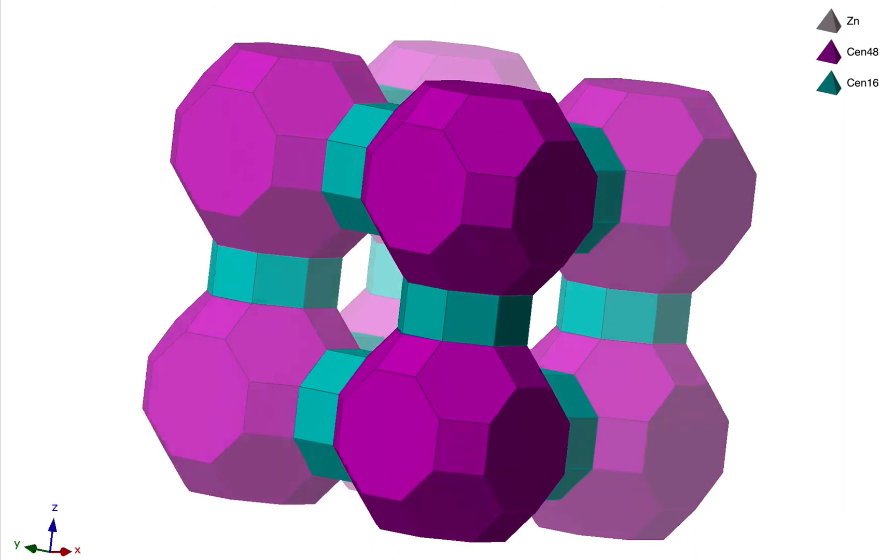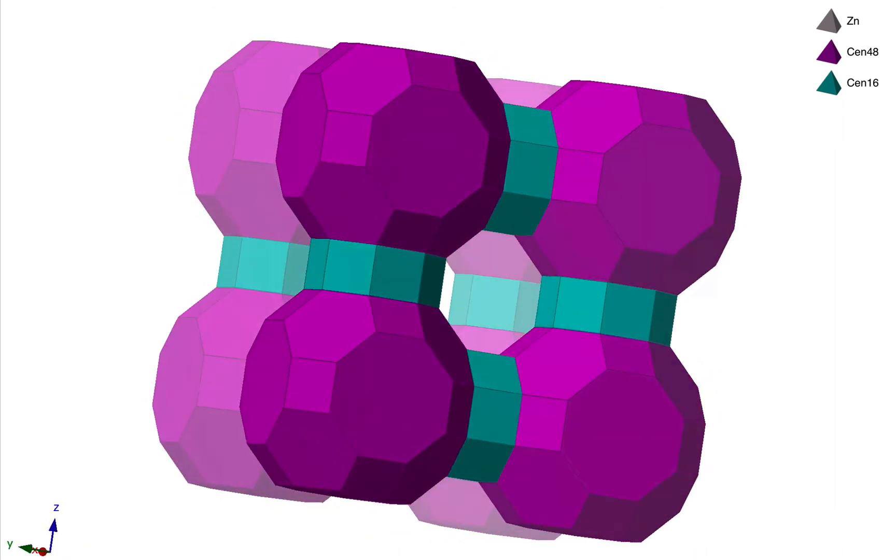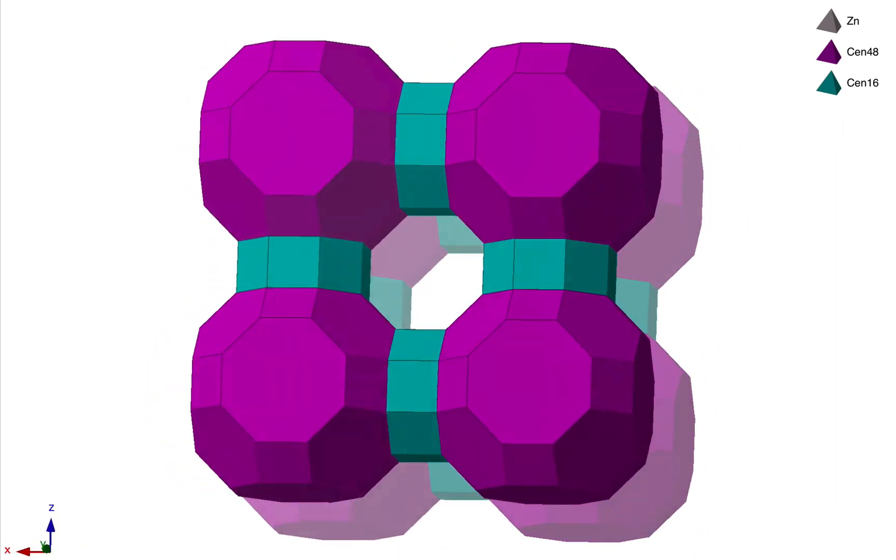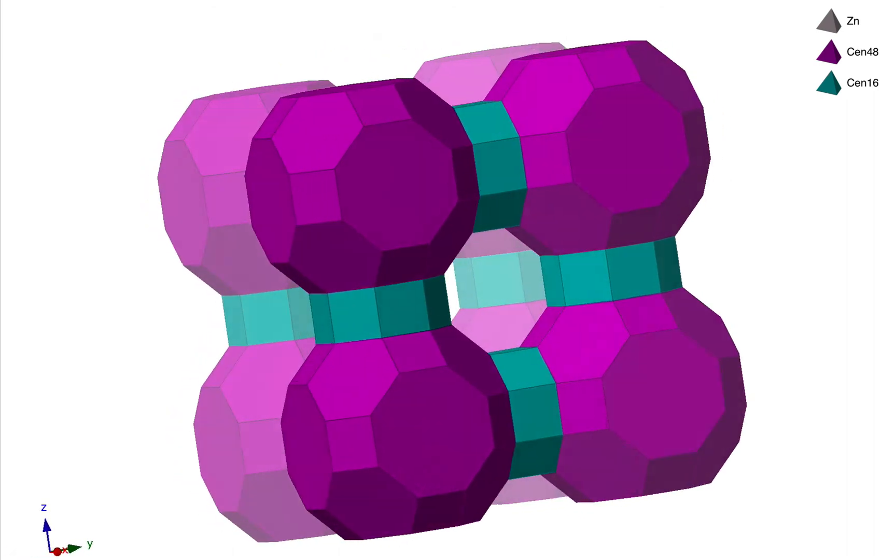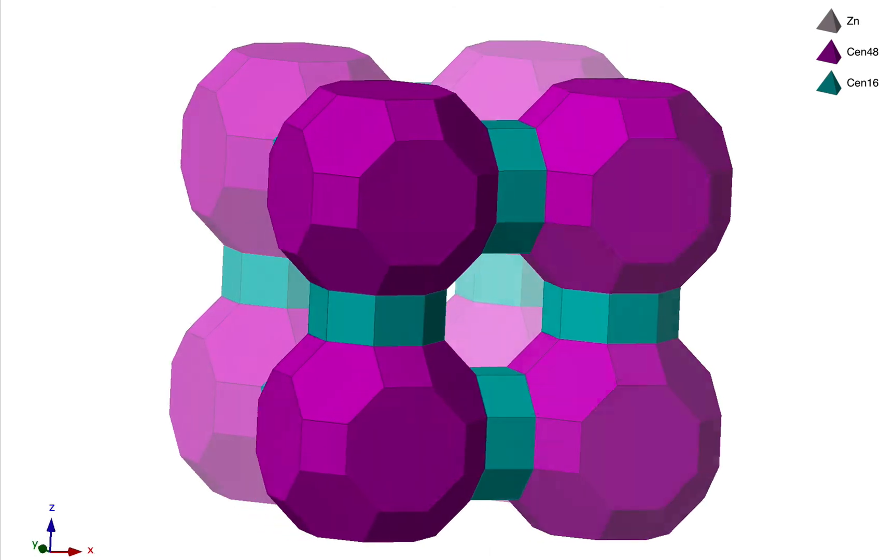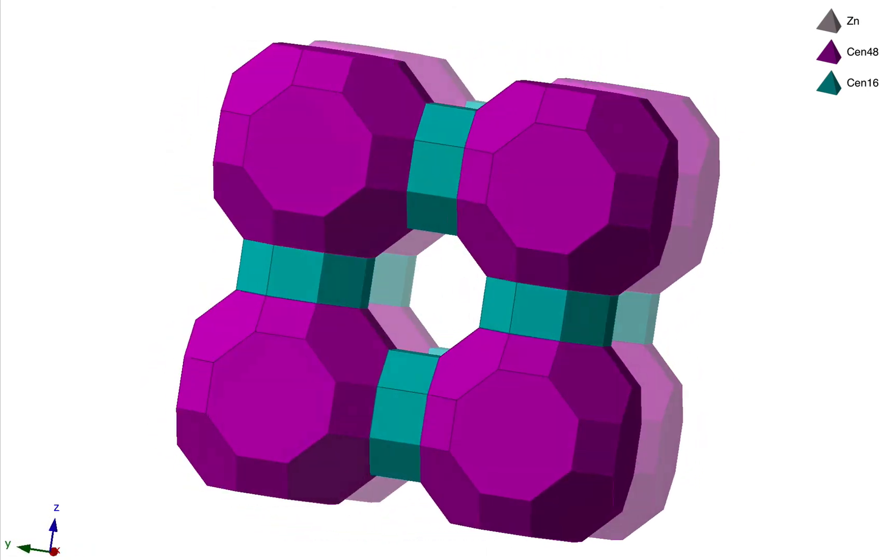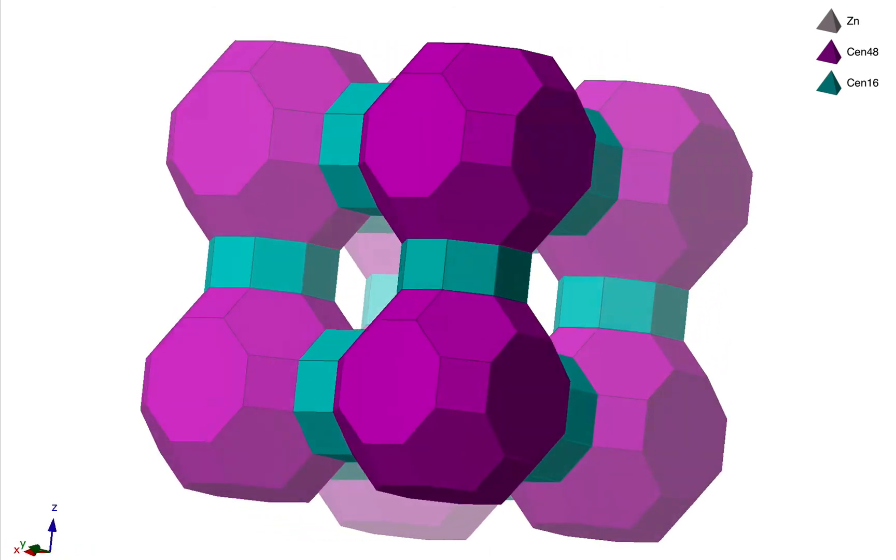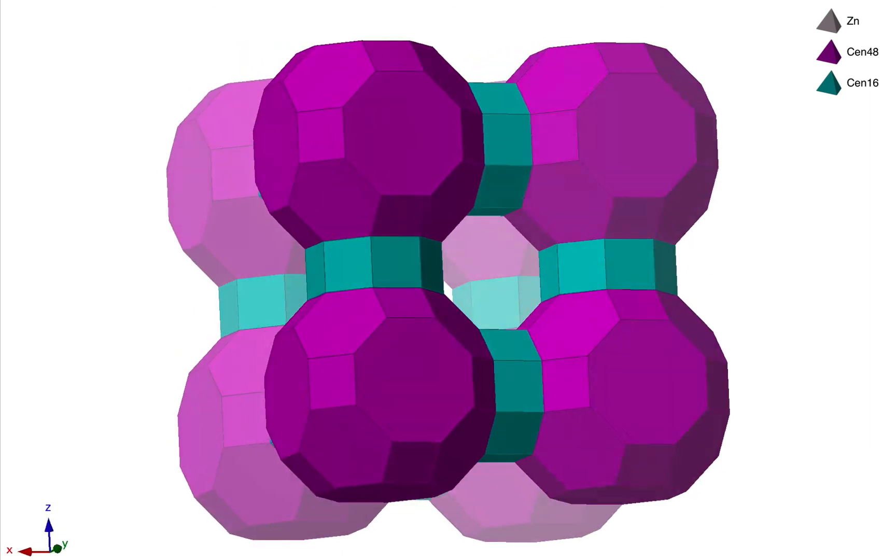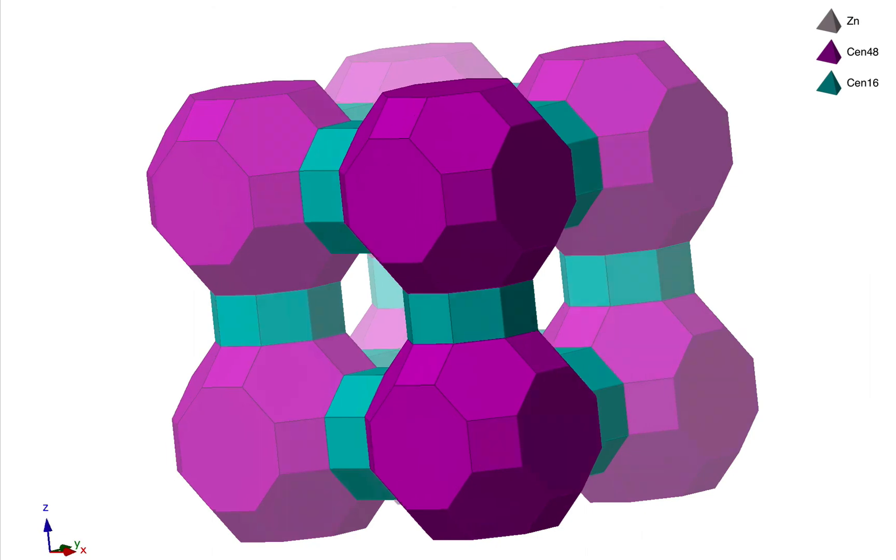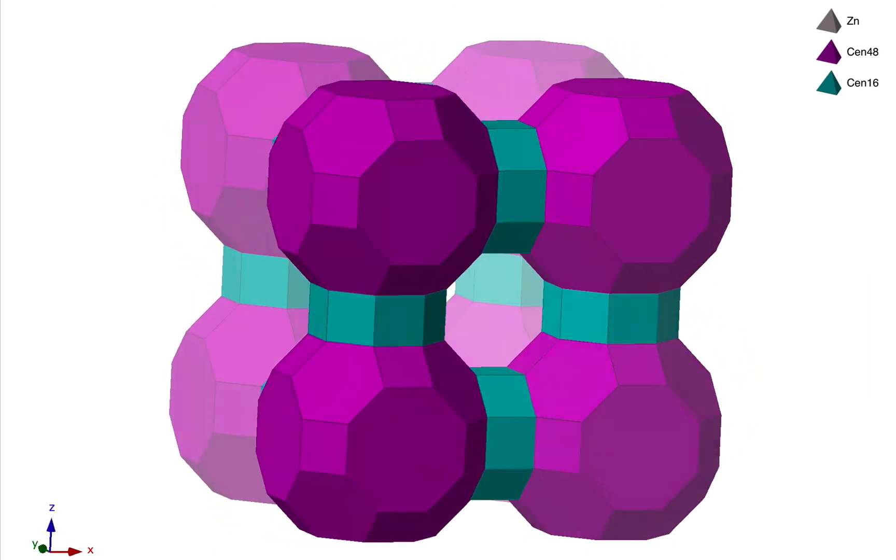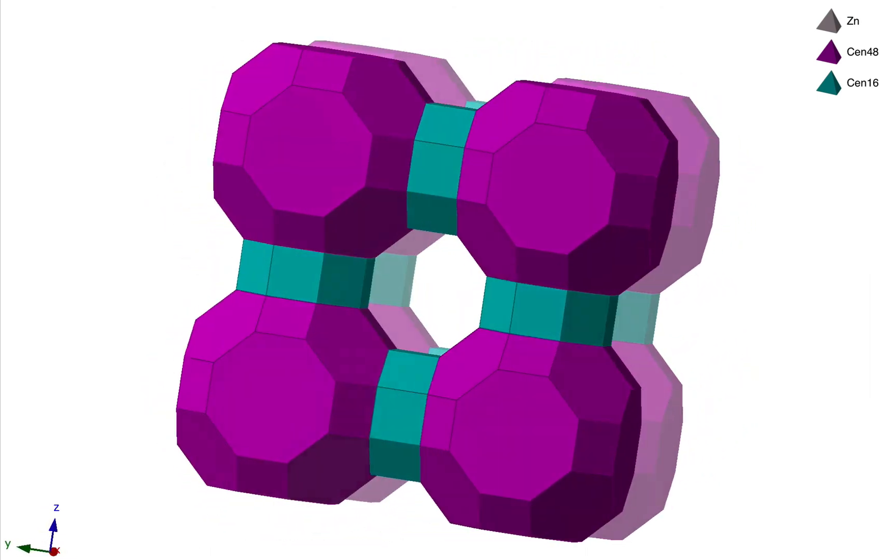So there we have it, a greatly simplified representation of what was a very complex framework structure. And incidentally, by making these kinds of simplifications, one can start to see relationships between very different structures. So this is a framework that's actually based on a zeolite structure, although chemically it's very different.